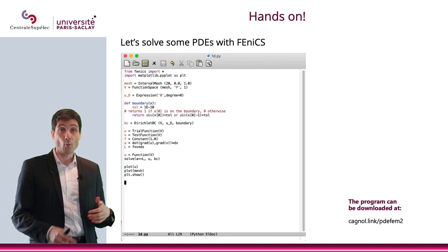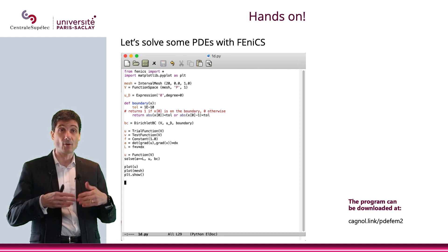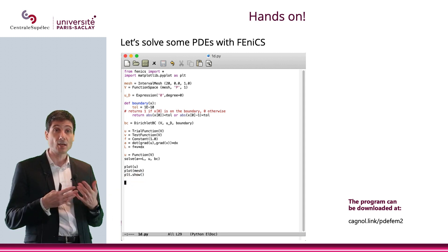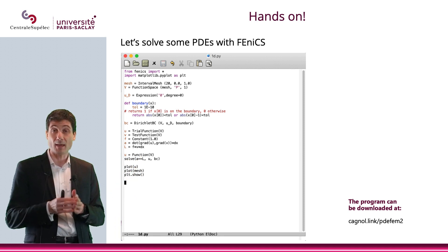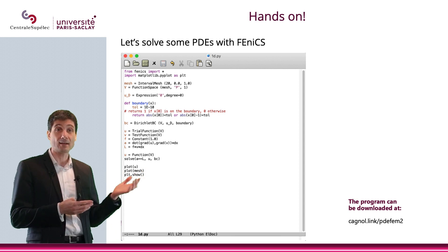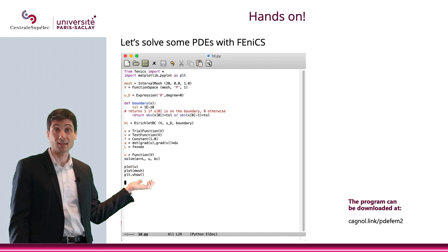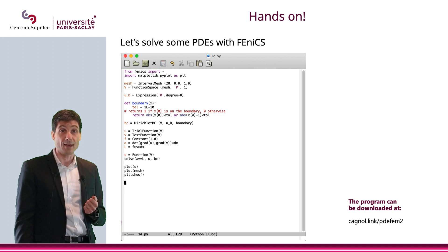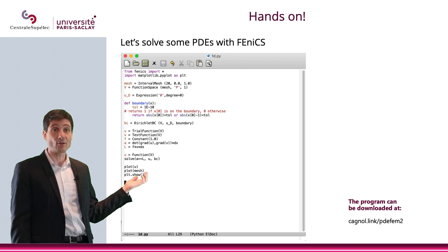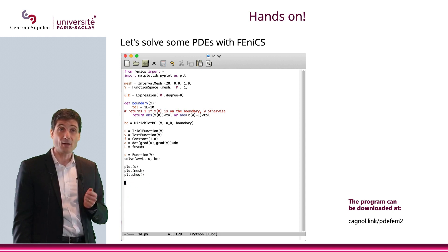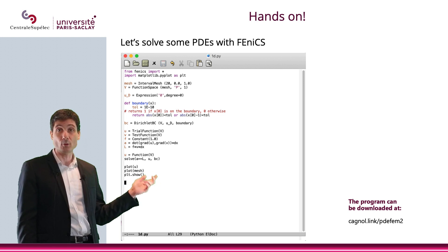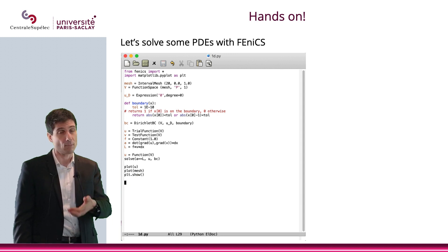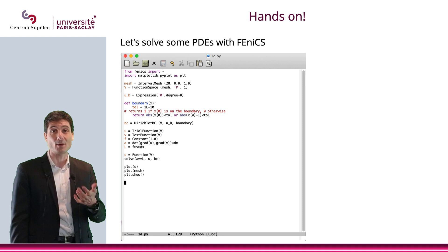Then I simply define the boundary condition, the test functions, and I describe my bilinear form and my linear form — basically, here is 'a', here is 'l'. When everything is put together, the syntax lets you understand how it works: I'm putting in the variational formulation, and then saying I want to find the solution. As you can see, I request a plot of u and also a plot of the mesh — one will be in blue, the other in orange — and plt.show() is a standard Python command that provides me with the graph.